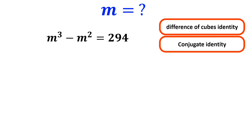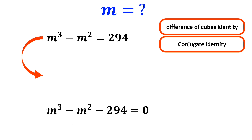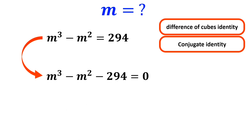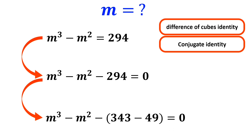First, we rewrite this equation as follows: m cubed minus m squared minus 294 is equal to zero. Now, we can rewrite this equation in the following way: m cubed minus m squared minus 343 minus 49 is equal to zero.